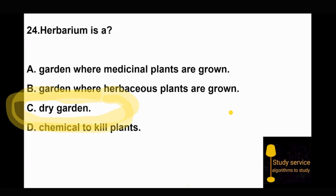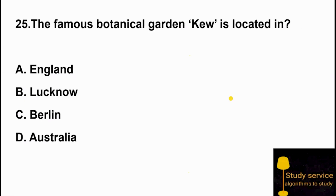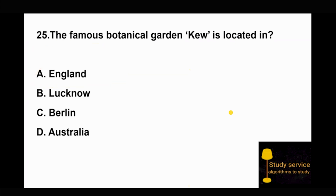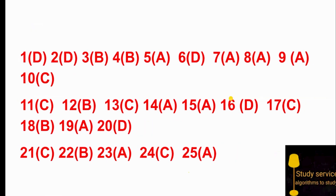Next and last question: The famous botanical garden Kew is located in. Option A: England. Option B: Lucknow. Option C: Berlin. Option D: Australia. The famous botanical garden Kew is located in England. Option A is the right answer.